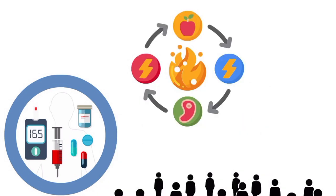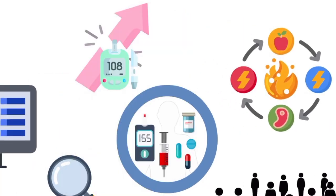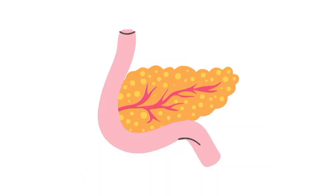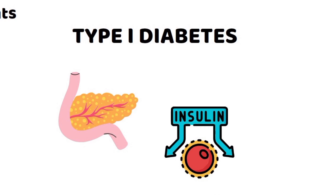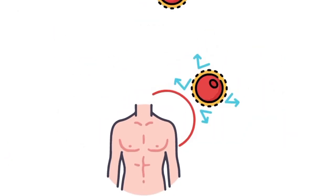Diabetes is a chronic metabolic disorder that disrupts blood sugar regulation. It occurs when the pancreas doesn't produce enough insulin, which is type 1 diabetes, or the body becomes resistant to insulin, which is type 2 diabetes.